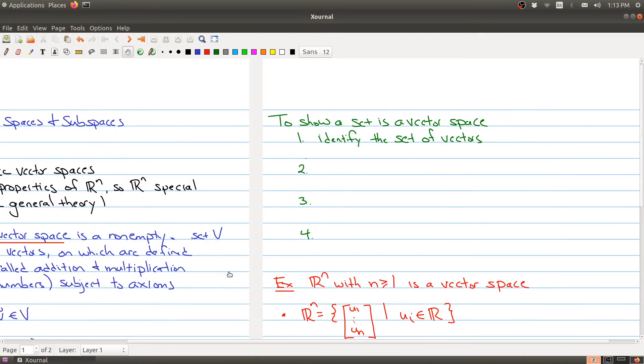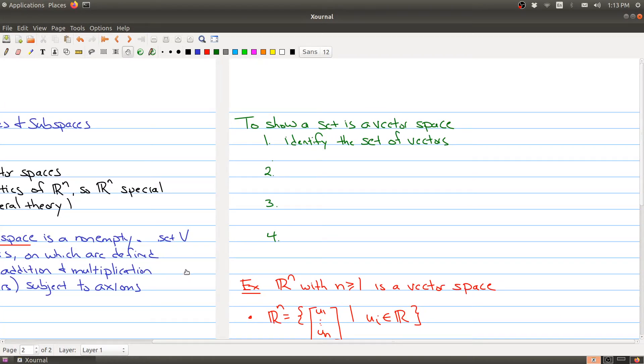Okay. And before we go get into examples, just let me kind of help you decide whether a set is a vector space or not. Okay. So say you're given a set and you want to check if it's a vector space. First of all, you should be comfortable. What are the objects in my set? What are identifying the set of vectors?